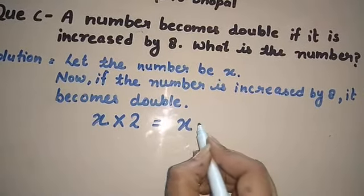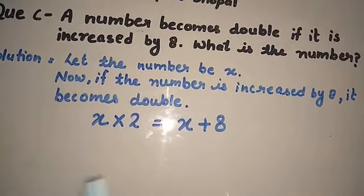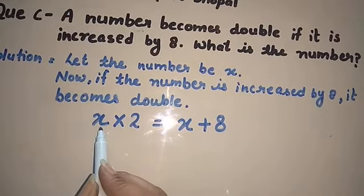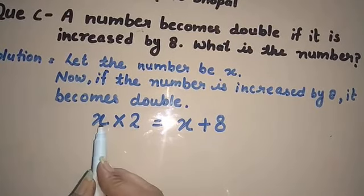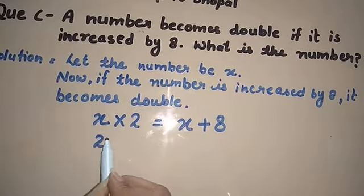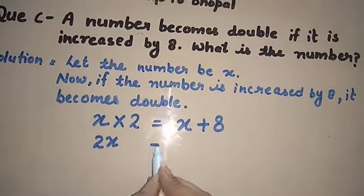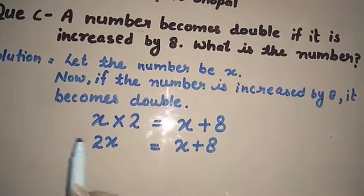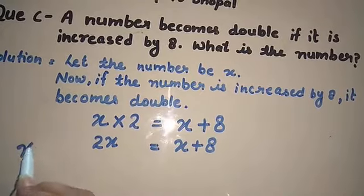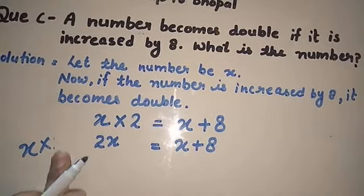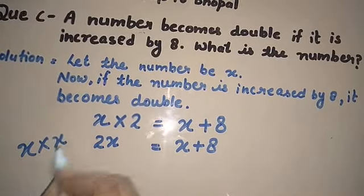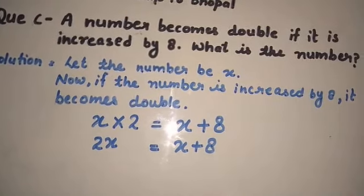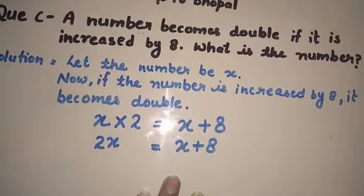Number is X, increased by 8. So 2 multiplied by X, so our answer is 2X. Now X plus 8. 2X means X into 2.